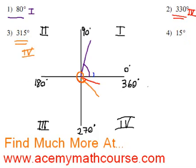What about 15 degrees? Piece of cake, because we start at zero and just go 15 degrees. It's a tiny little angle between zero and 90, therefore it's in the first quadrant also.